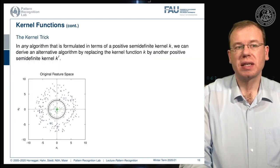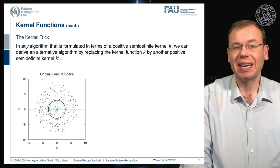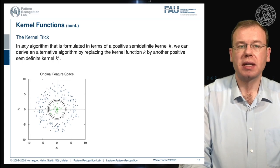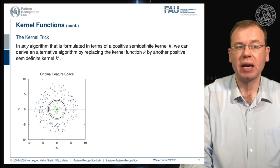Now this brings us to this kernel trick. In any algorithm that is formulated in terms of positive semi-definite kernels, we can derive an alternative algorithm by replacing the kernel function k by another positive semi-definite kernel k prime.